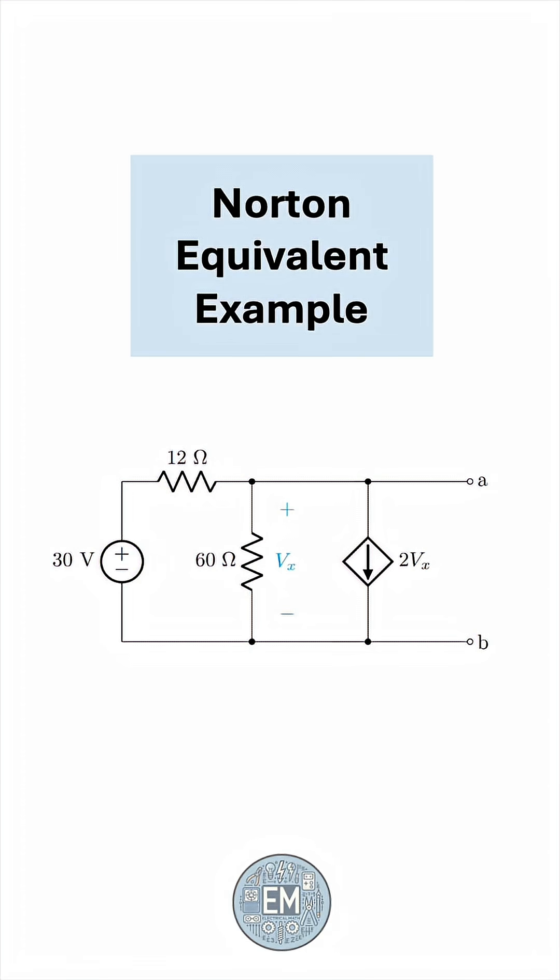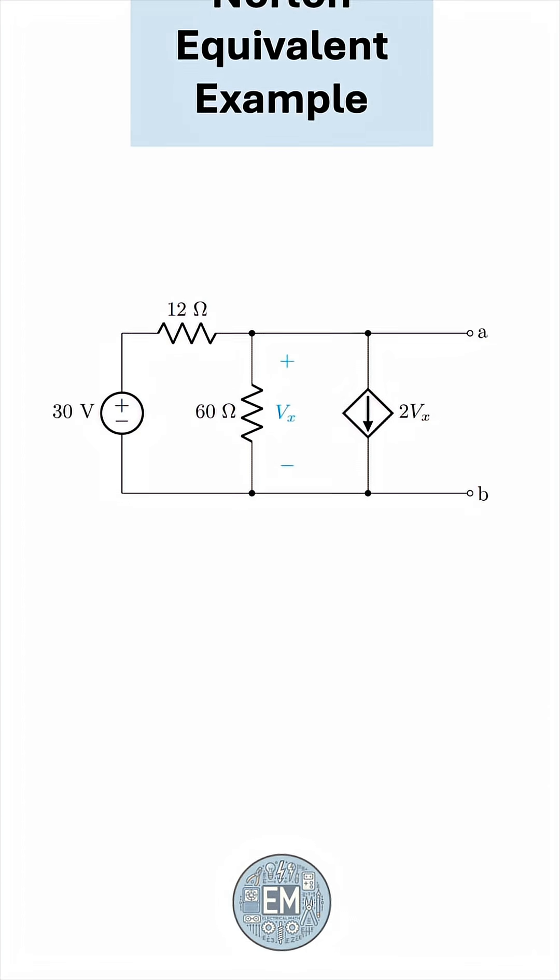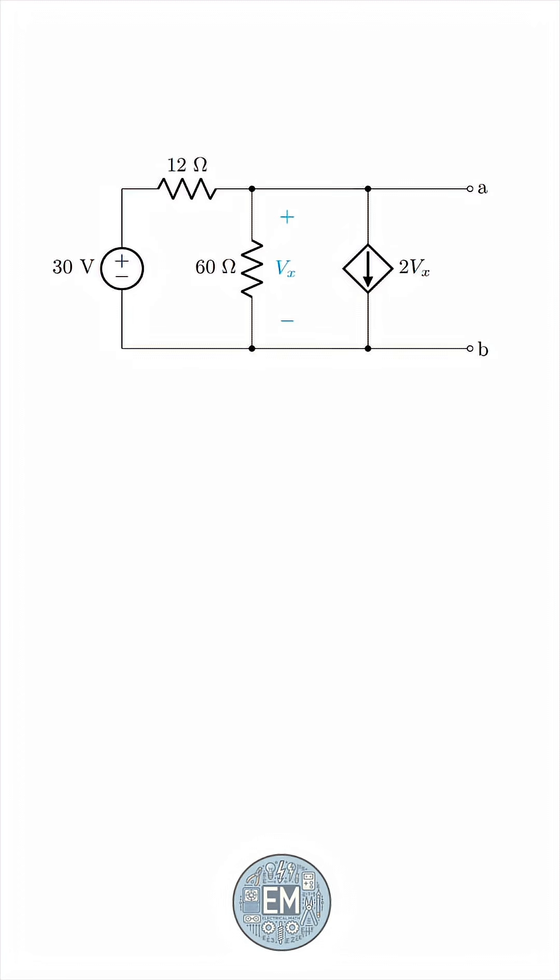Find the Norton equivalent of this circuit involving a dependent source. As we do when finding the Thevenin equivalent, we start by finding the open circuit voltage between the terminals.